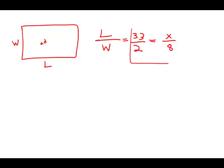So I'm going to take this equation and multiply both sides by 8 so that I isolate the x. I get 8 times 3.3 over 2 equals x.